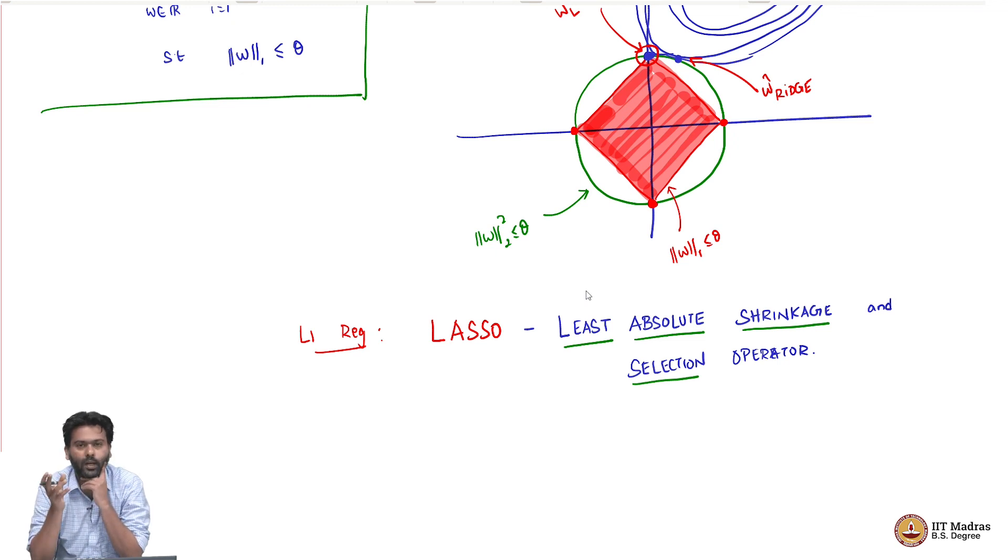Selection because the hope is that you are not just shrinking to make W values smaller, but you eventually want this to select the important features. You want to push a lot of Ws to 0, components to 0, exactly 0, such that the remaining features which get non-zero values are the ones that are important for minimizing the loss. We can select only those features and leave out the rest. So this is also a selection problem. Operator is just fancy word to say that it is a regularizer. This is what is called as the lasso penalty or lasso problem.